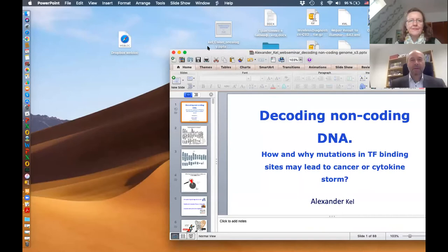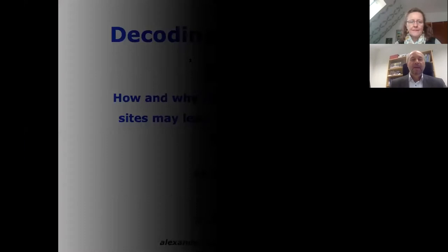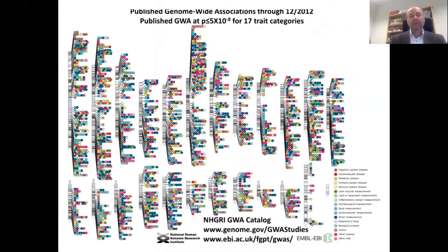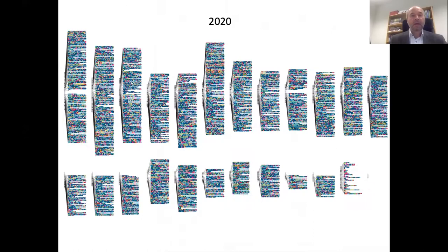Thank you for coming. Today we will talk about non-coding DNA — not non-coding RNA, don't mix them up. Looking at these pictures of the distribution of known variants, actually SNPs in the human genome, those connected with different diseases, you see they cover the complete genome. This is a recent picture taken from this initiative mapping disease-associated mutations to the genome.